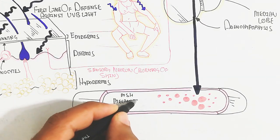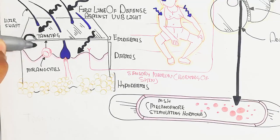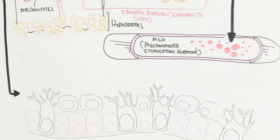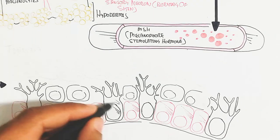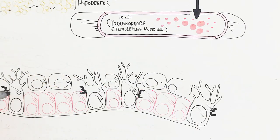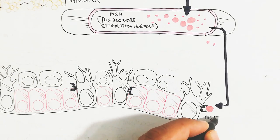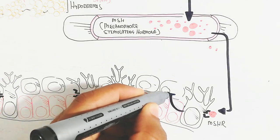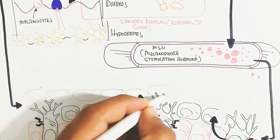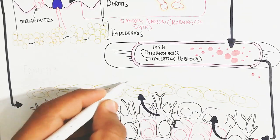This melanophore stimulating hormone targets the melanocytes of the skin. The melanocytes contain a receptor known as the melanophore stimulating hormone receptor. When this receptor increases, it leads to more tanning. Some people have fewer MSH receptors and some have more, which is why tanning variability exists from person to person. The MSH will then stimulate melanin production.